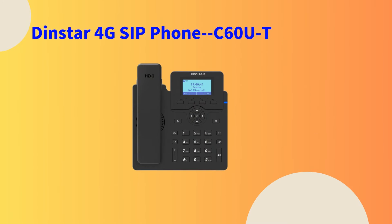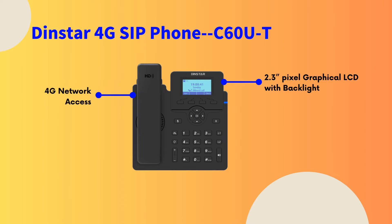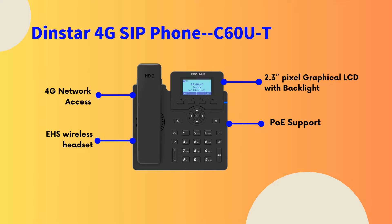Dista 4G SIP phone C60UT is an entry-level RP phone with 2.3-inch pixel graphical LCD with backlight. It supports 4G network access, PoE, EHS wireless handset, and 5-way conference. If you want to know more details about our product, please visit our website.